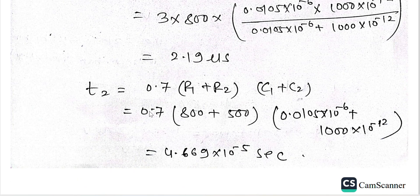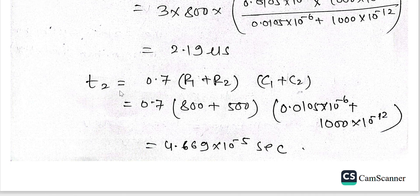T2 is the wave tail time. The formula is 0.7 times (R1 plus R2) times (C1 plus C2). Put the value of R1, R2, C1, and C2, and we can get the result.